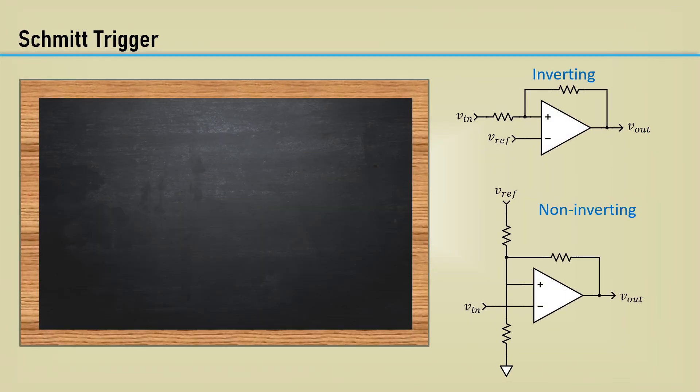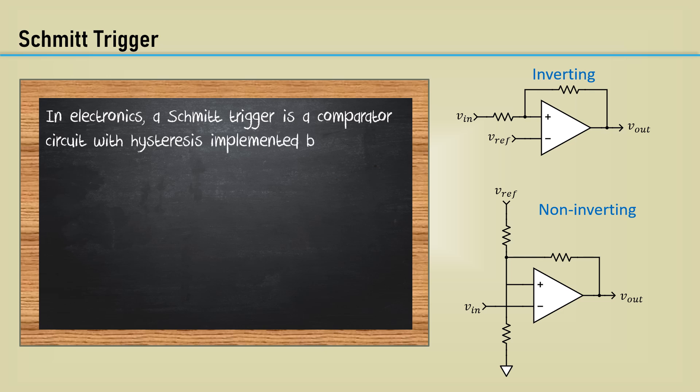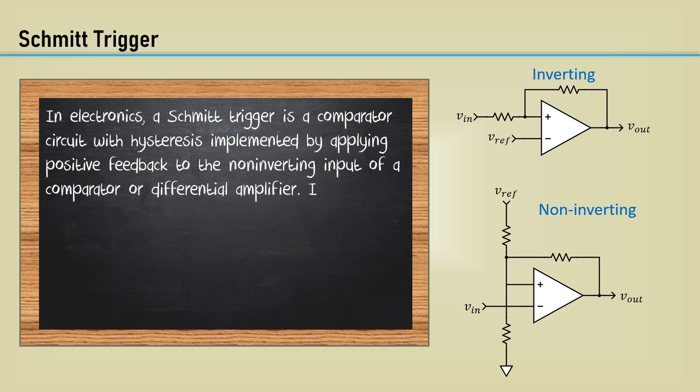It is also called a Schmitt trigger. In electronics, a Schmitt trigger is a comparator circuit with hysteresis, implemented by applying positive feedback to the non-inverting input of a comparator or differential amplifier. It is an active circuit which converts an analog input signal to a digital output signal.